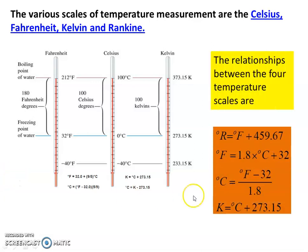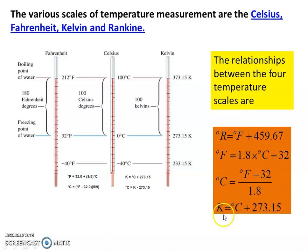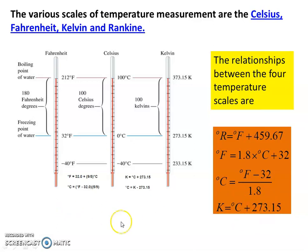Now, the conversion equations: Degree Rankine = Degree Fahrenheit + 459.67. Degree Fahrenheit = 1.8 × Degree Celsius + 32. Degree Celsius = (Fahrenheit − 32) / 1.8. Kelvin = Degree Celsius + 273.15, or simply 273. This relationship you must remember: temperature in Kelvin equals Celsius plus 273.